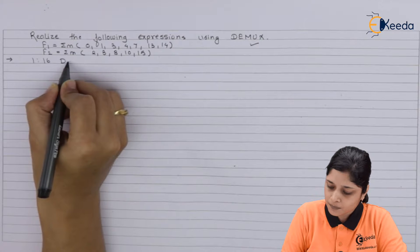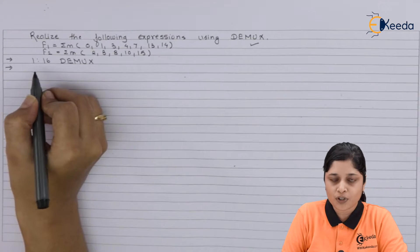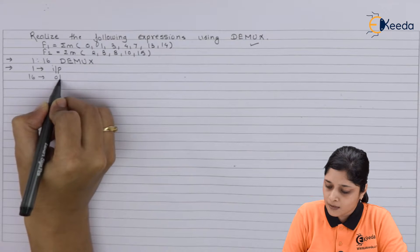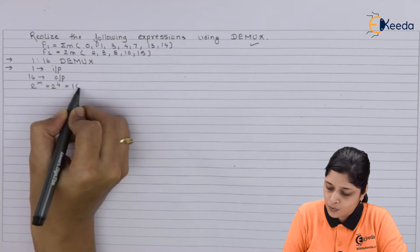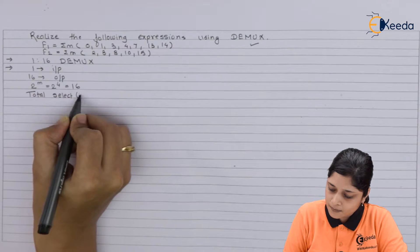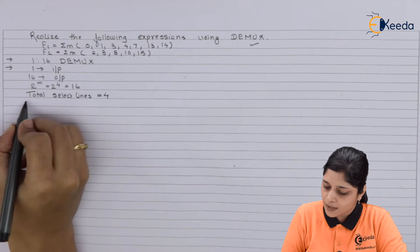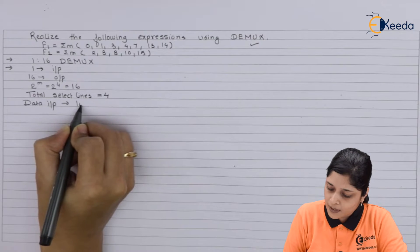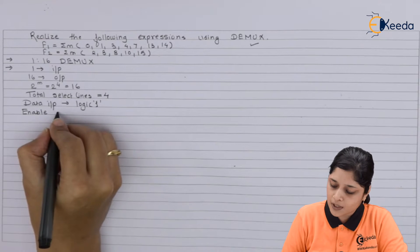We will write some important points: it has one input, then 16 outputs. 2 raised to the power m equals 2 raised to the power 4 equals 16, means total select lines required are 4 because 2 raised to the power 4 is 16. Data input you have to always connect to logic 1, and enable terminal also you have to connect to logic 1.